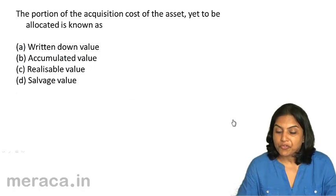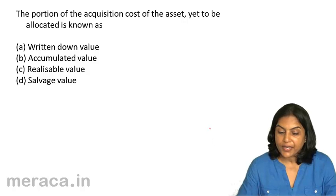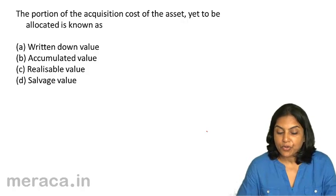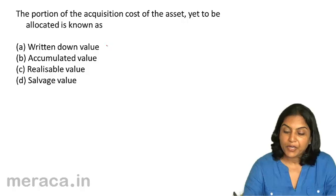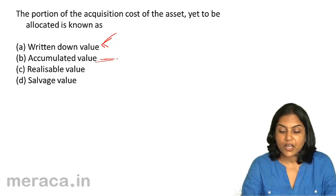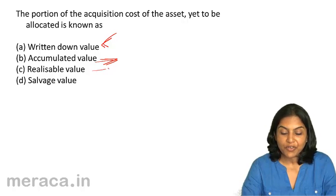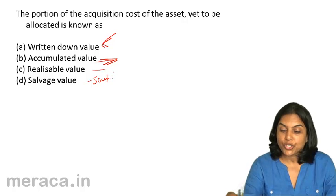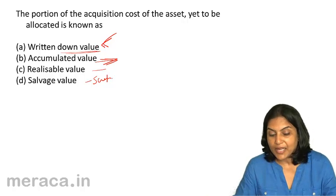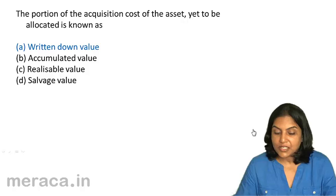The portion of the acquisition cost of the asset yet to be allocated is known as: A. written down value, B. accumulated value, C. realizable value, D. salvage value. Accumulated value is a vague concept. Realizable value is what you get on sale of an asset. Salvage value is the scrap value. The portion of the acquisition cost yet to be allocated is the written down value — the amount still to be written off over the remaining useful life. The correct answer is A.